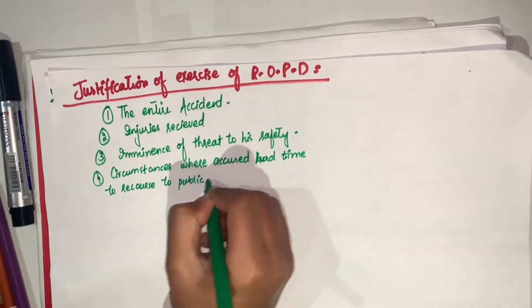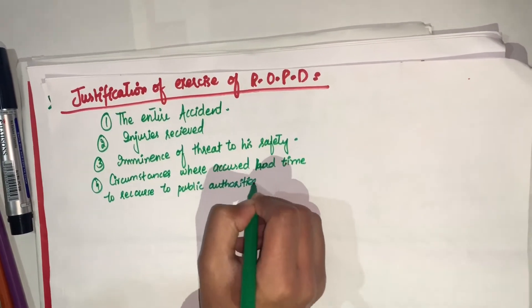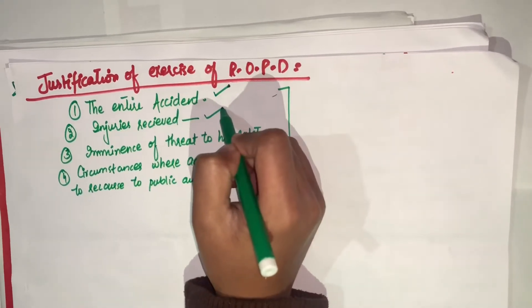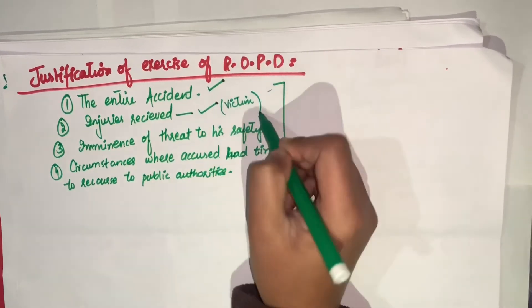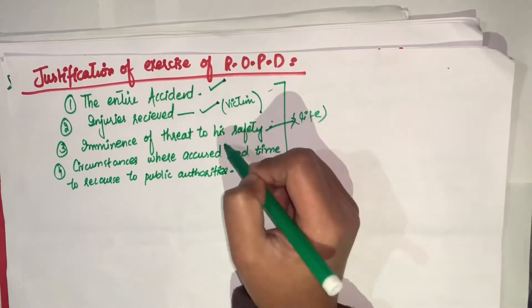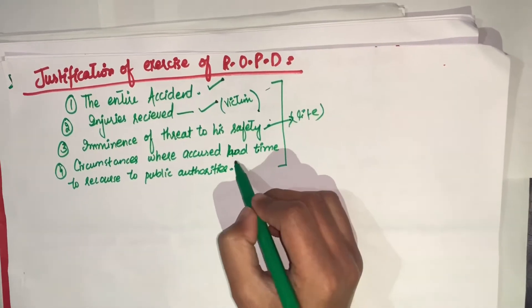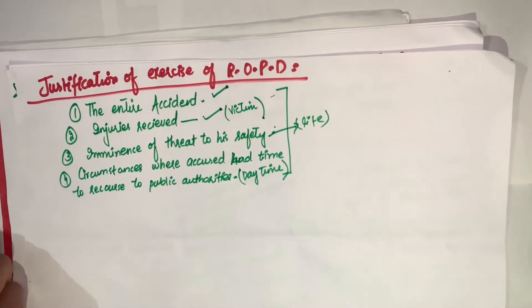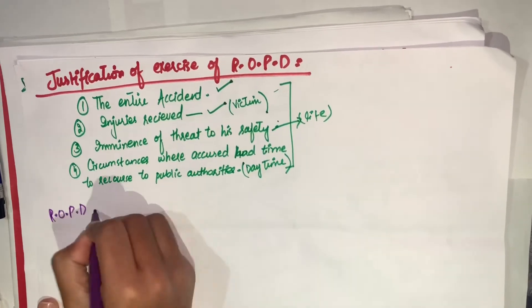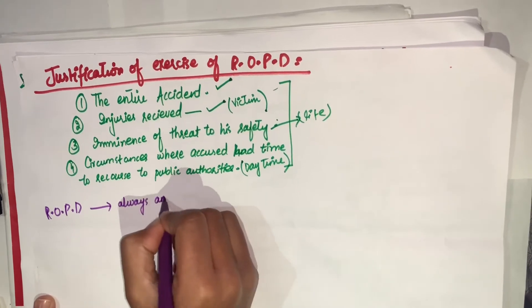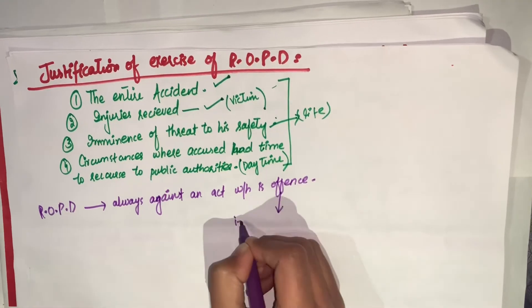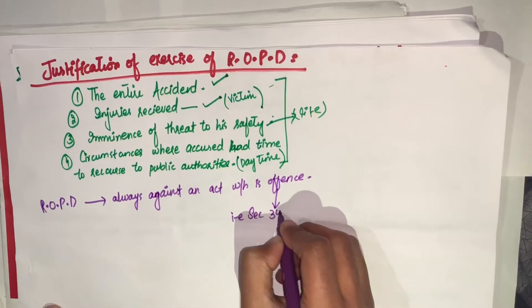And number third, there was an imminence of threat to his safety. उसकी life को कोई खतरा था जिसकी वज़ह से उसने अपना right of private defense exercise किया. Number second, circumstances where accused had no time to recourse to public authority. उसके पास इतना time नहीं था कि वो police से जा कर मदद ले सकता था. This was the justification of exercise of right of private defense.